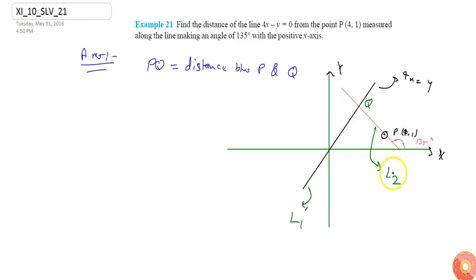So first we need to determine the equation of L2. Let's take L2. Since L2 makes an angle of 135 degrees, its slope will be tan 135 degrees, or I can say tan 135 is minus 1, so slope is minus 1.